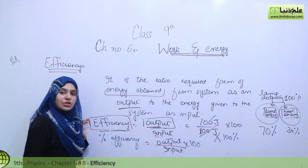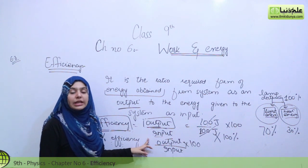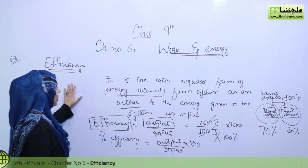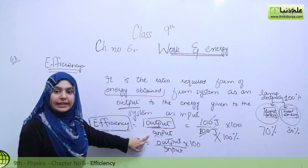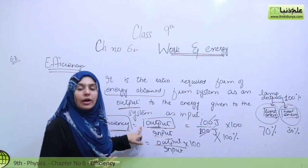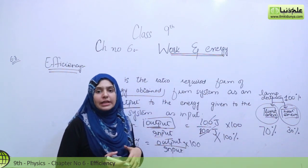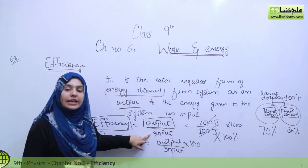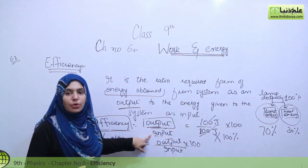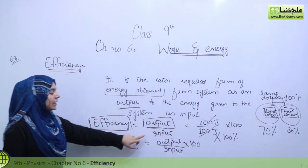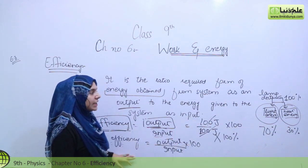That is why we never have 100% efficiency, because the output is never as much as the input we are giving. The basic ratio between output and input defines efficiency — the output we are getting from the system and the input we are giving to get that output. And to get percentage efficiency, we multiply by 100. So, if the output is 80% of the input, we get 80% efficiency.